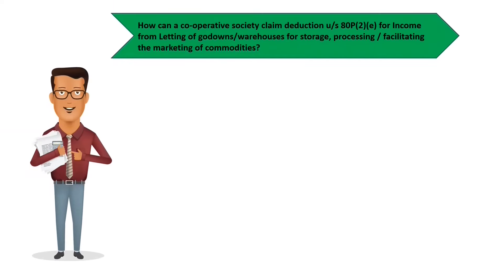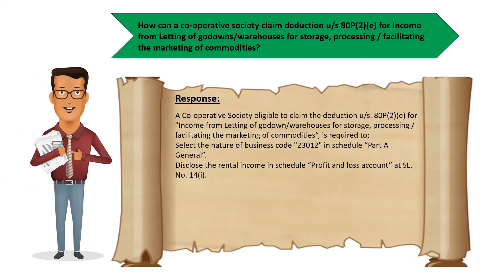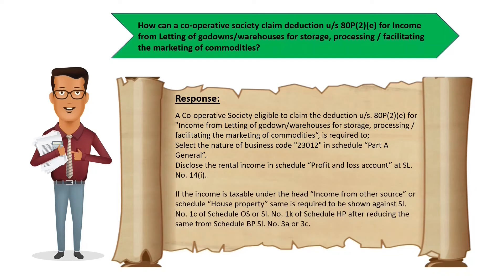Another question: how can a cooperative society claim deduction under section 80P subsection 2 clause E for income from letting off go-downs or warehouses for storage, processing, or facilitating the marketing of commodities? A cooperative society eligible to claim this deduction is required to select the nature of business code 23012 in Schedule Part A General. It is also required to disclose the rental income in Schedule Profit and Loss Account at serial number 14-1. If the income is taxable under income from other sources or Schedule House Property, the same is required to be shown again at serial number 1C of Schedule OS or serial number 1K of Schedule HP, after reducing the same from Schedule BP serial number 3A or 3C.